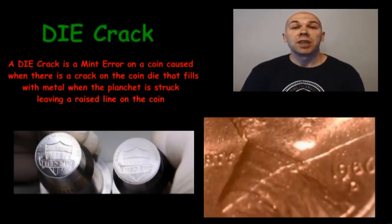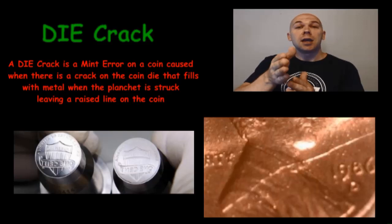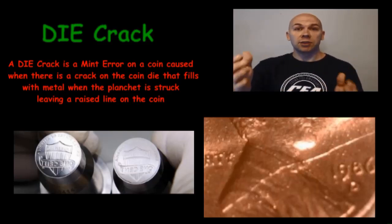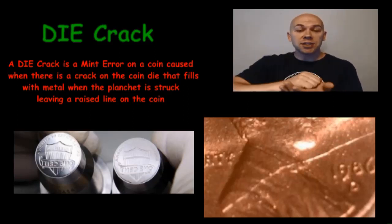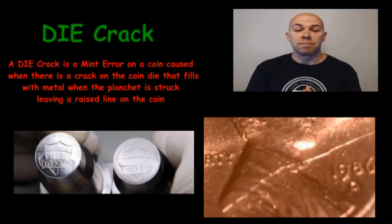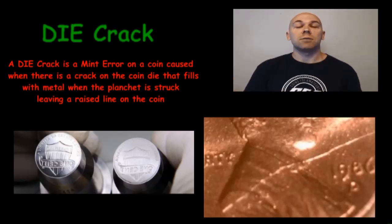Die crack. A die crack is a mint error on a coin. We just talked about cuds, which are created by a piece of the die breaking off. On a die crack, imagine there's a literal crack running through the die. When it strikes the blank planchet, that crack will fill with the metal, leaving behind a raised line like on this Lincoln cent right here. Die crack errors can also sell for more than face value, especially on the more dramatic examples.